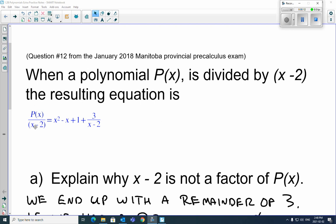P of x divided by x minus 2. So that is there. This is what the result is. So when you do that, you end up with x squared minus x plus 1 plus 3. That's your remainder.